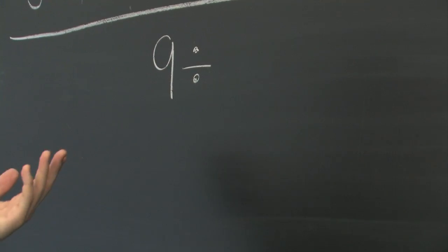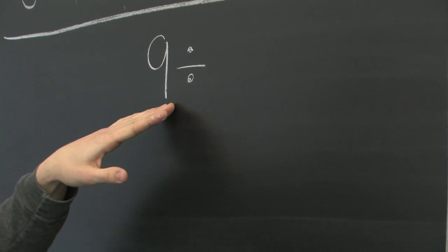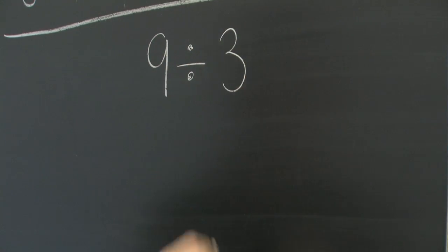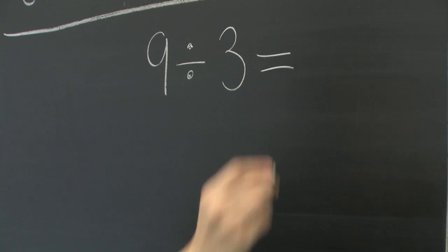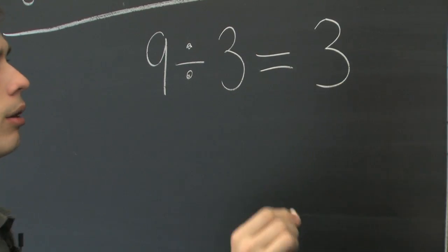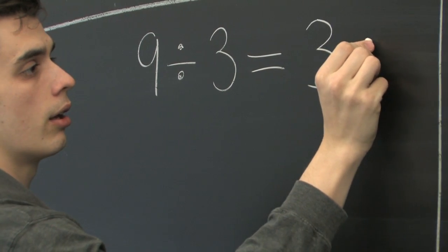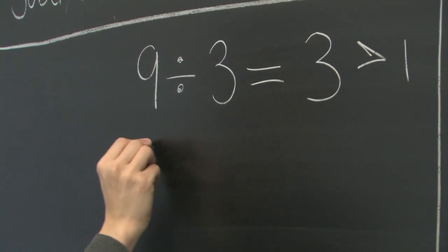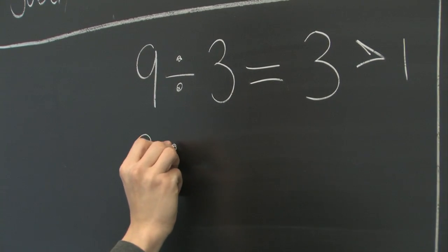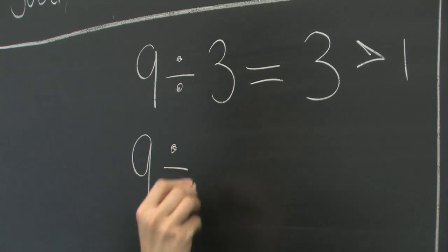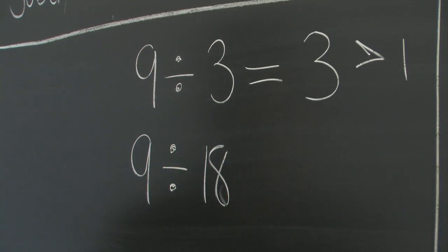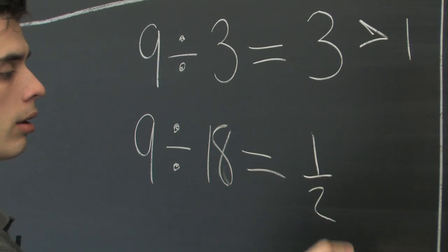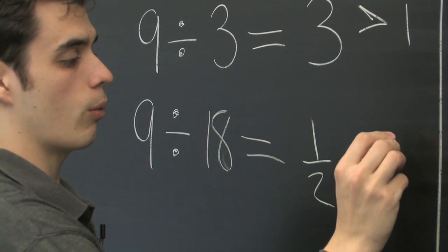Take a number, say 9. Divide it by something that is smaller than itself, we get 3 in this case, which is greater than 1. If we divide it by a number which is larger than itself, in this case 18, we will get a number which is less than 1.